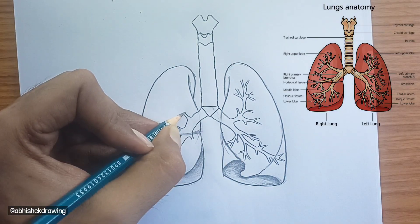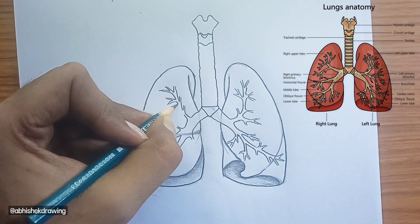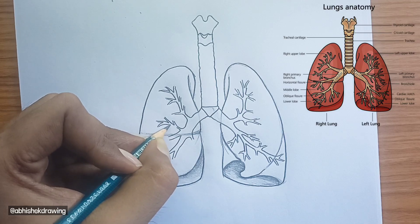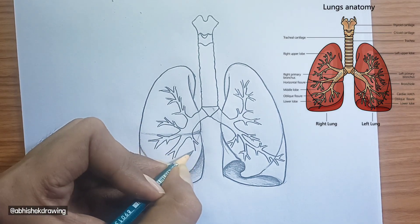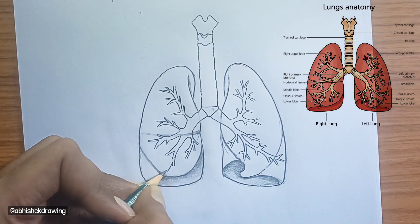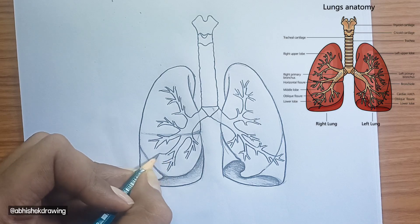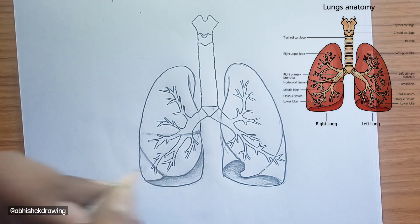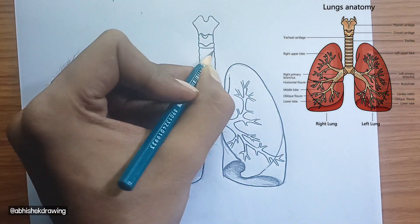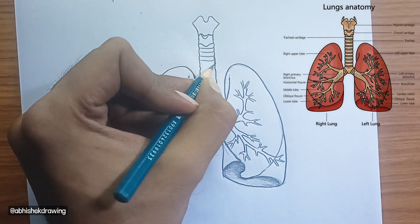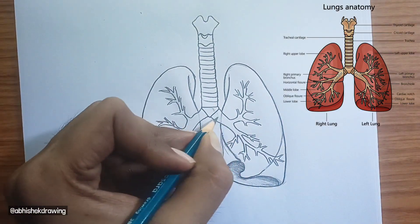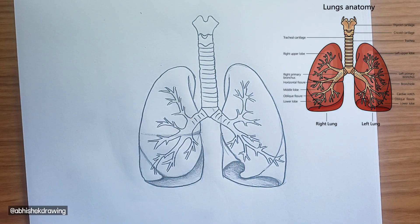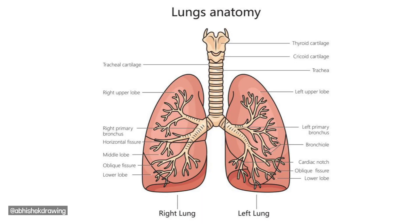Within the lungs, the bronchial tree consists of bronchioles: smaller airways that branch off from the bronchi within the lungs. They eventually lead to the alveoli, or air sacs, where gas exchange occurs, though the alveoli themselves are not depicted in this diagram. In summary, the diagram provides a clear overview of the gross anatomy of the respiratory system, from the laryngeal cartilages down to the main bronchi and the lobar divisions of the lungs, along with some of the smaller branching airways.